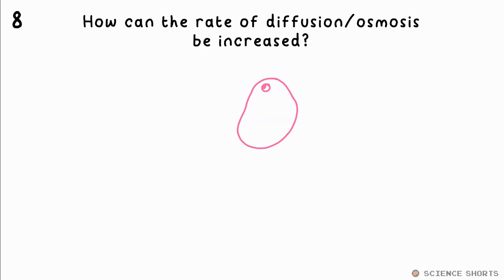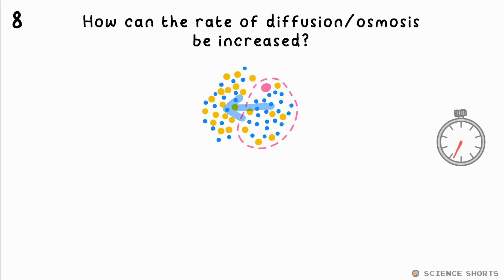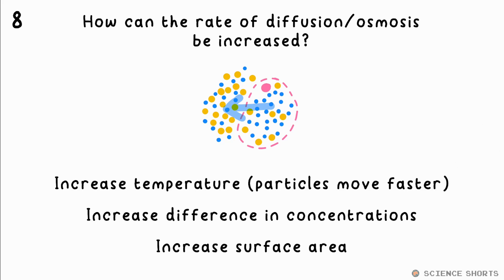How can you increase the rate of diffusion or osmosis? You can increase the temperature, because particles have more energy so they move faster. You can increase the difference in concentrations, and you can also increase the surface area the diffusion is occurring across.